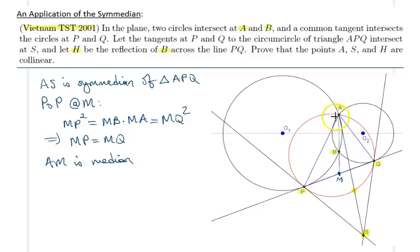But then using the knowledge of the median and the simmedian, I know that those two are symmetric with respect to the angle bisector. Now let me step back. In the question we are trying to find that A, S, and H are collinear. All I will do to solve this problem—I already have my line AS—I need to prove that H... So let me write that down. Therefore, show that H is on the simmedian line AS.